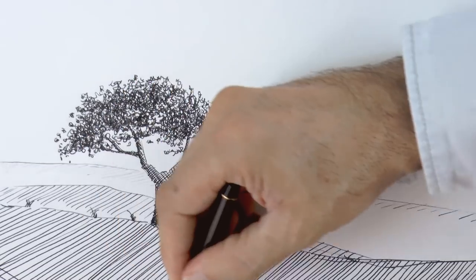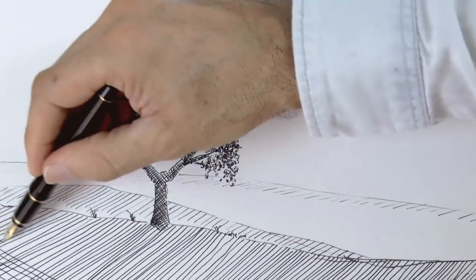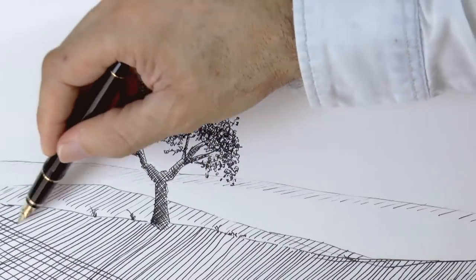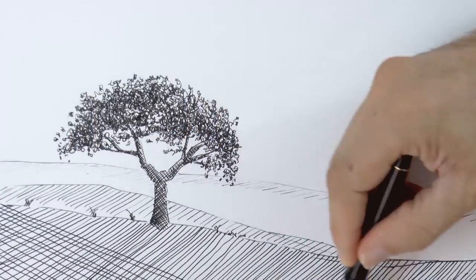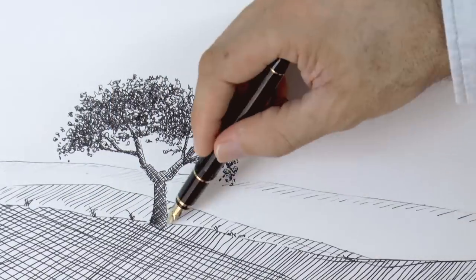I want this first plane a lot darker, so we will do lines in different directions. First we cross hatch like this, I find this process really relaxing, very enjoyable.